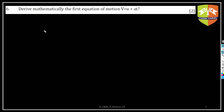Hello friends, here is another question: derive mathematically the first equation of motion, v is equal to u plus at. The question specifically says 'derive mathematically,' so we will have to use mathematical tools to derive this equation.